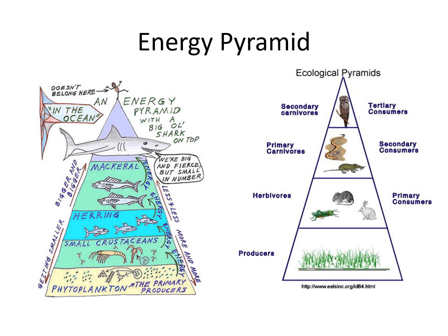An energy pyramid shows how much energy is moving up to the next level, shown by the pyramid getting smaller and smaller as you go up. Think of it this way: if you're making money, 100% of that money is not going to go to your kids when you die because you spent some of it. The same thing happens with energy — when a rabbit eats the grass and then gets eaten by the snake, 100% of the energy the rabbit got from the grass is not going to go to the snake because the rabbit spent some of that energy. Only 10% of the energy goes up to the next level.